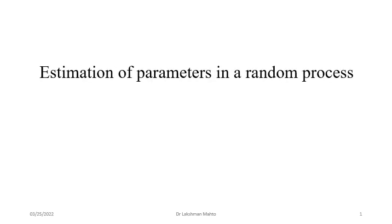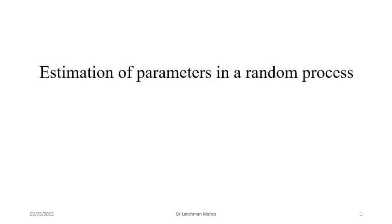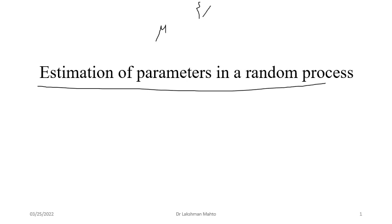We will discuss in detail how to estimate those parameters. Starting with the mean function — a random process is actually a sequence of random variables, but here the time index may be discrete or continuous, so it is something more than just a sequence.